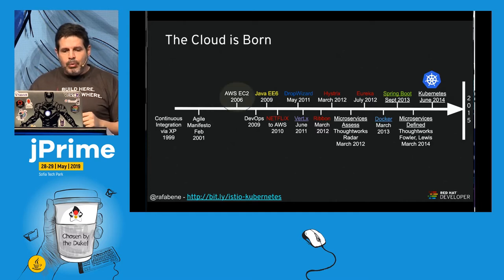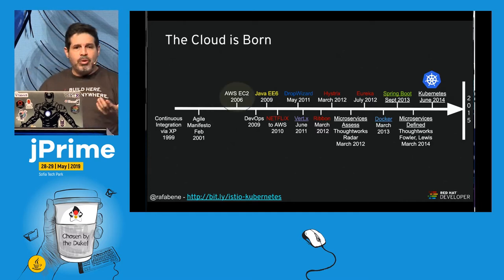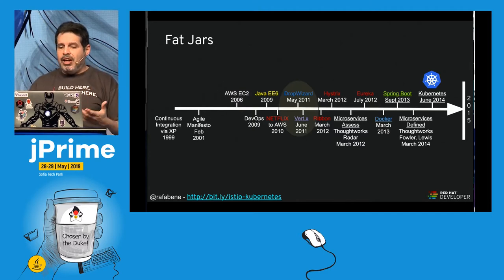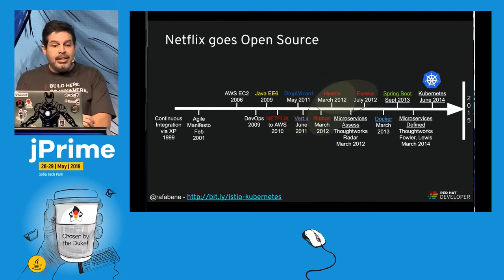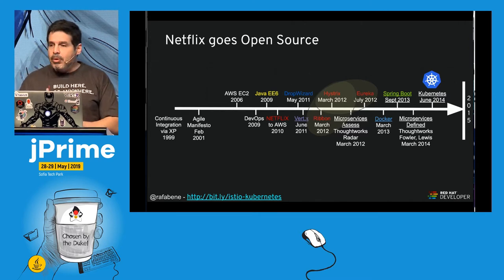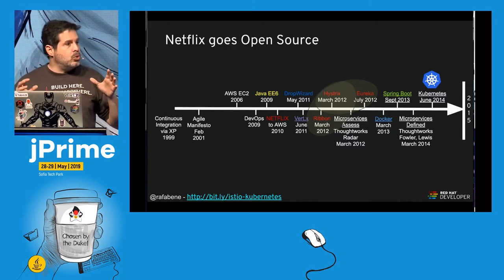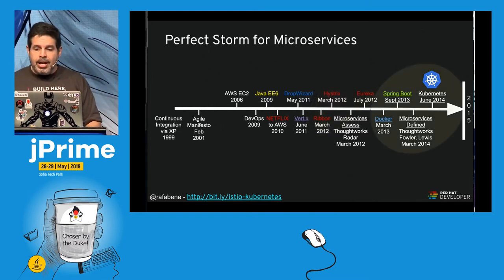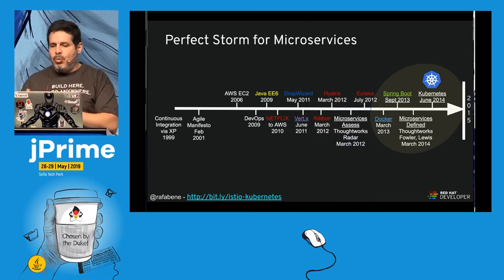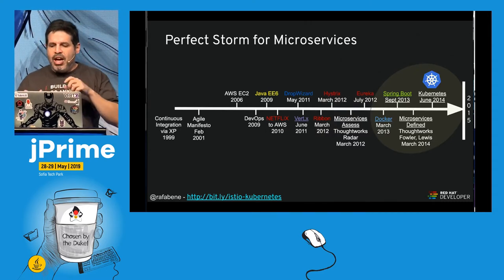Let's recap the history of microservices. In 2006 the cloud was born with Amazon. For Java developers, Dropwizard and Vert.x became popular in 2011 with fat jars. Then Netflix went open source in 2012, releasing Ribbon, Hystrix, and Eureka. That made everyone want to produce microservices. Then there was the perfect storm: Docker, Spring Boot, Kubernetes — and microservices were defined.